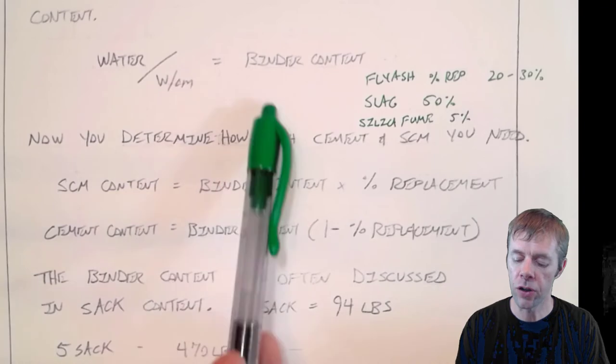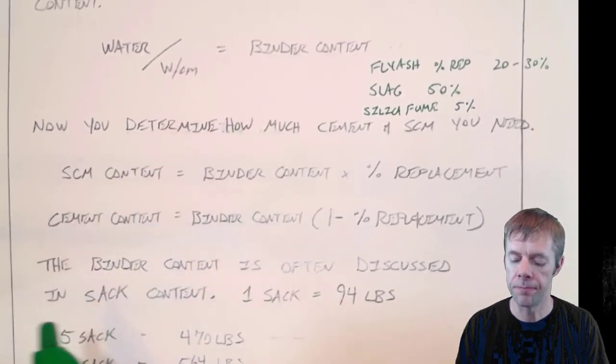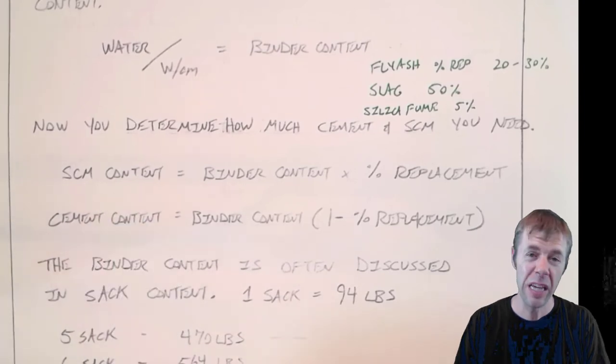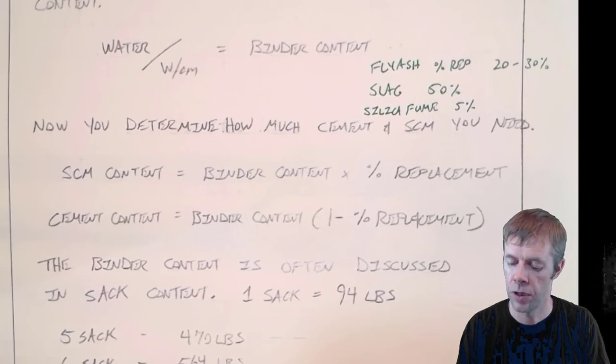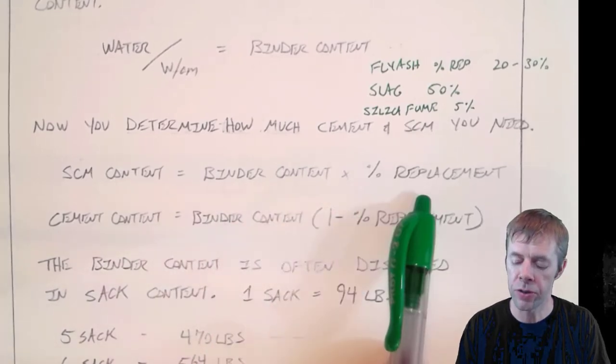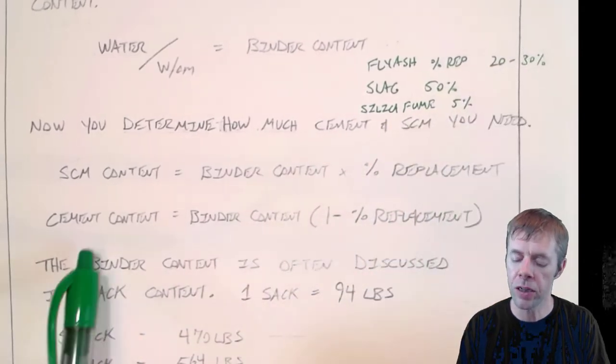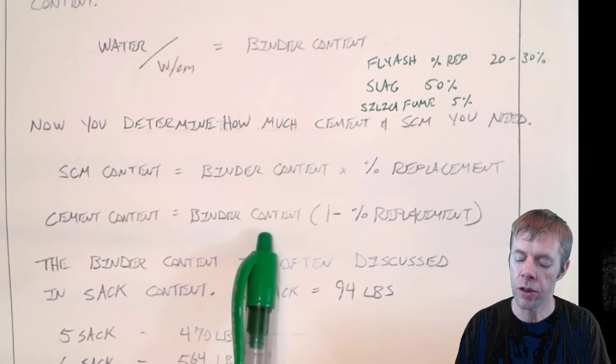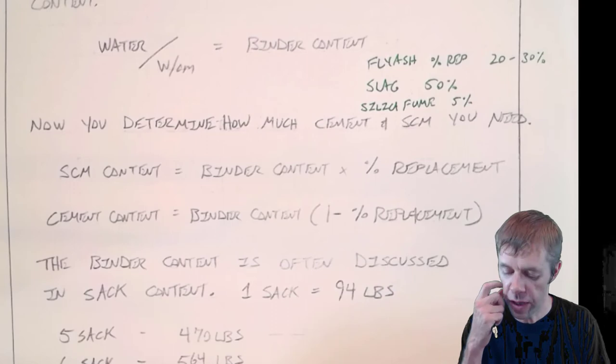So again, once you find your binder content, you're going to find what percentage of it is going to be SCM. That's determined by either experience, you know by using this material what you can use, or it may be determined based on the durability that's required for the concrete. So take your binder content multiplied by your percent replacement. And then your cement content will be your binder content times one minus the percent replacement for the SCM.